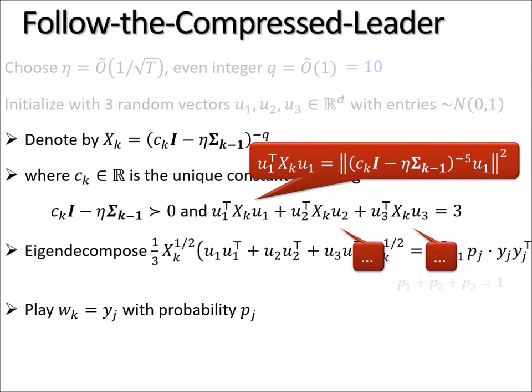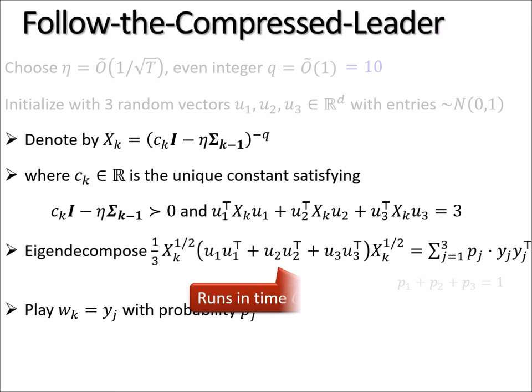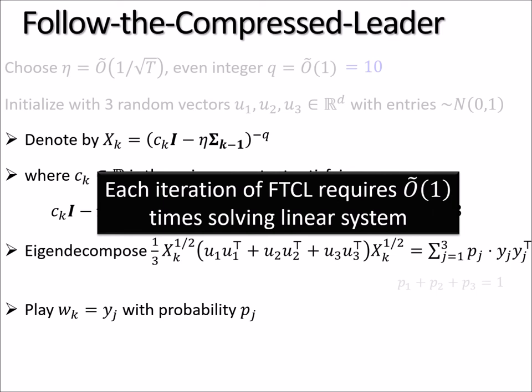Therefore, this requires you to solve just five times of linear systems. And that gives you a vector and you compute the Euclidean norm square. In this way, you can efficiently compute this and the other two using just linear system solvers. And finally, this value of c_k, one can just binary search over it. And this rank 3 decomposition of the eigenvector system can also be implemented in just linear time. Therefore, I would conclude that this new strategy can be implemented so that each iteration requires a logarithmic number of computations of solving linear systems.